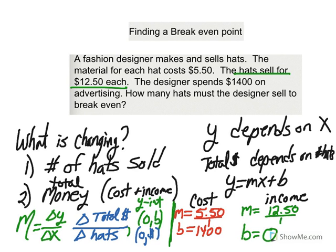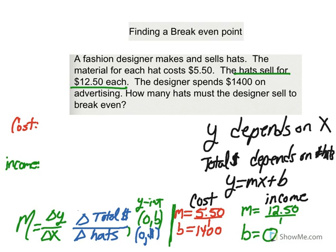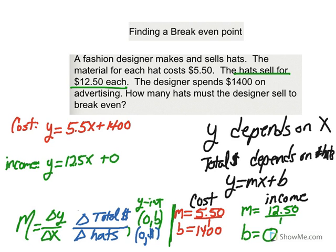Please pause the video and copy this all into your notes. Now we're ready to write our equations in the form Y equals MX plus B. For cost, we have Y equals 5.5X plus $1,400. For income, we have Y equals 12.5X. The point where these two equations intersect is the break-even point — that's when income and cost are the same.